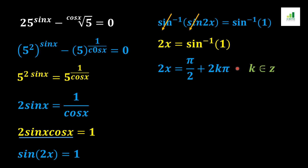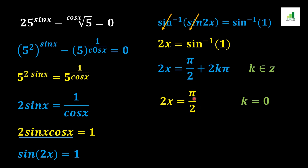In the next step, sine inverse of 1 is π/2 plus 2kπ, where k belongs to the integers. If we take k equal to 0, we can simplify the expression: 2x equals π/2 plus 0, which gives 2x equals π/2.